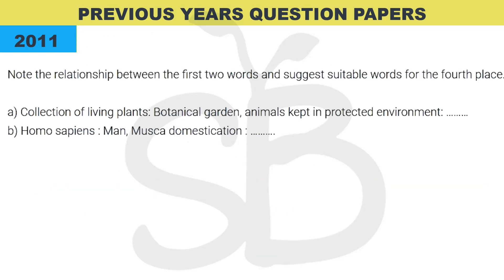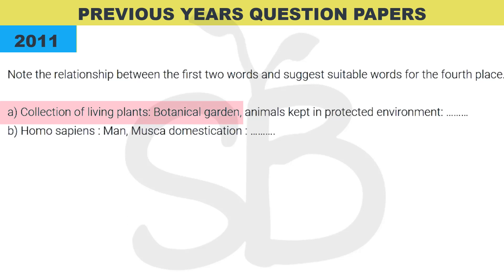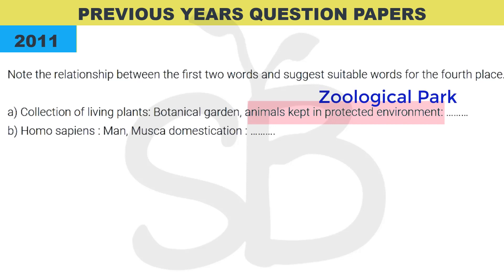From the 2011 exam: 'Note the relationship between the first two words and suggest a suitable word for the fourth place.' Option A: Collection of living plants is called Botanical Garden — Animal in a Protected Environment is called a Zoological Park. Also: Homo sapiens is to Man as Musca domestica is to Housefly.